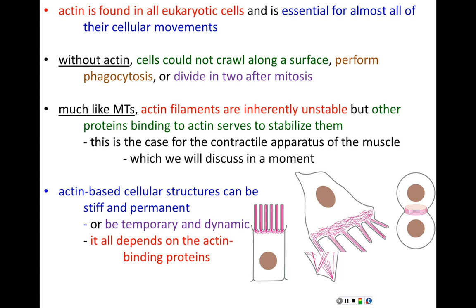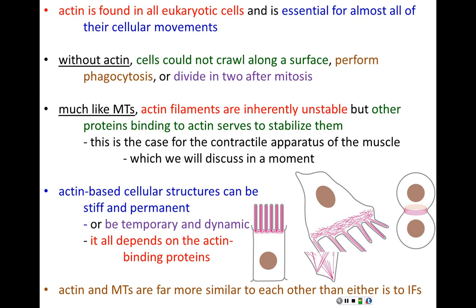As you've probably gathered, actin and microtubules are quite similar in some of their basic properties, and they are much more similar to each other than either is to intermediate filaments. Intermediate filaments' specialty was tensile strength and stability. Both microtubules and actin do not have stability going for them — their strengths lie in other domains.